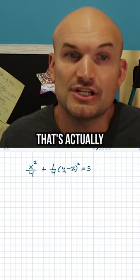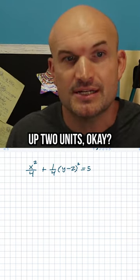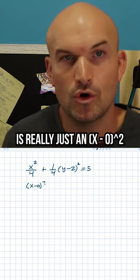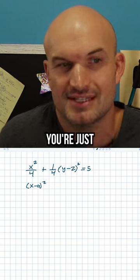But the y, you can see that's actually going to shift the center up two units. So again, another way you can kind of think about this is really just an x minus zero quantity squared. And therefore, you're saying you're just not going over zero.